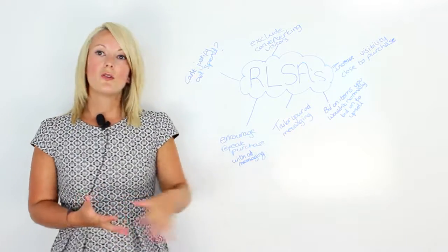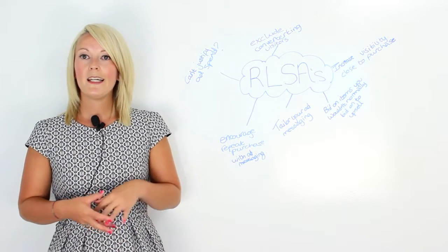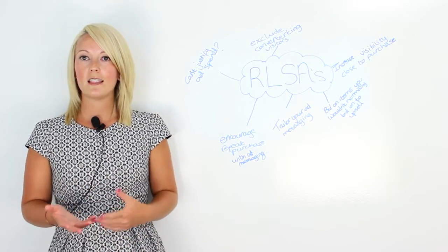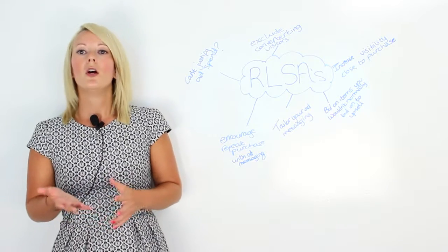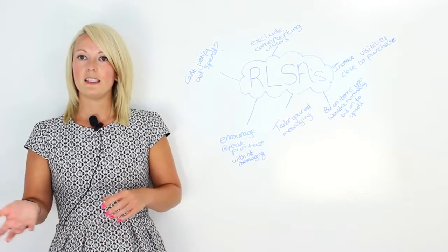You can use remarketing lists for search ads to bid on things that you wouldn't normally bid on. For example, say you're a mobile phone retailer and someone's bought a mobile from you, you might not normally bid on mobile phone cases because they've got a low return.